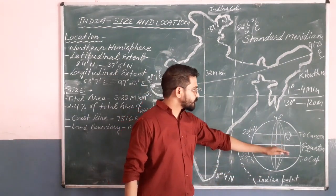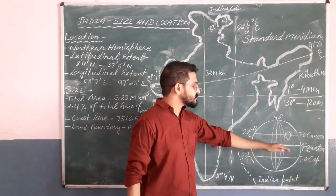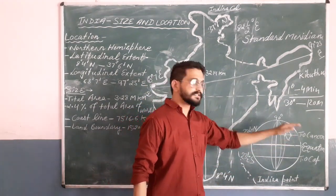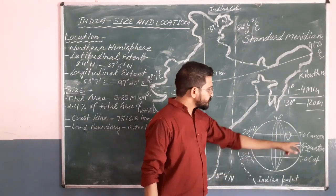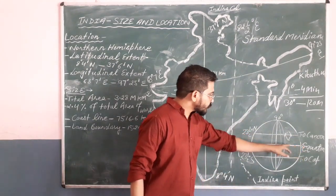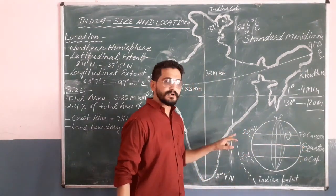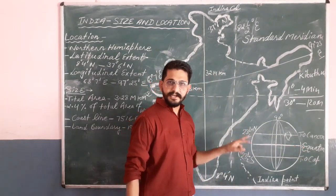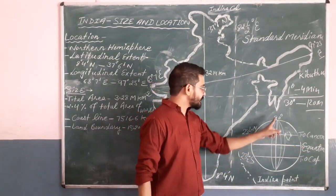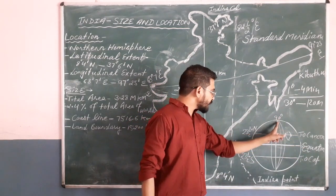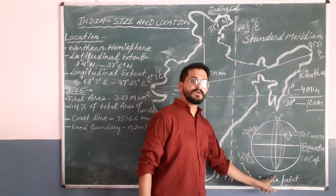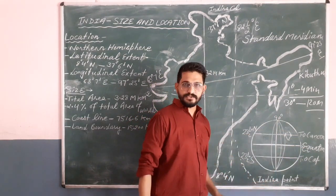From the equator, India lies in the northern hemisphere. These horizontal lines are called latitudes and the vertical lines are called longitudes.